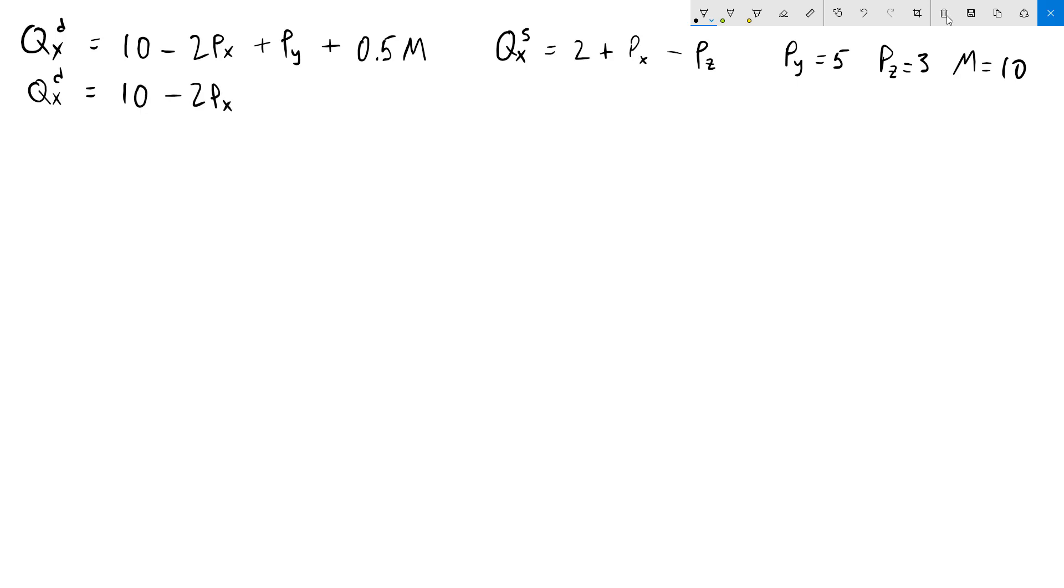I'll put 5 in for Py, and then I'll put 10 in for M. That's going to come out to 20 minus 2Px. Over here on the supply side, we'll do the same thing and plug in 3 for Pz. That will come out to Px minus 1.